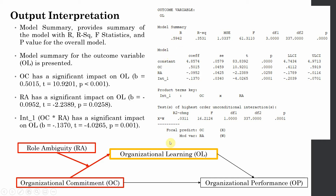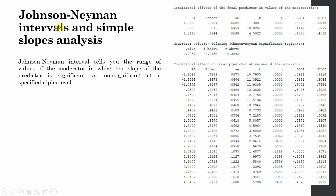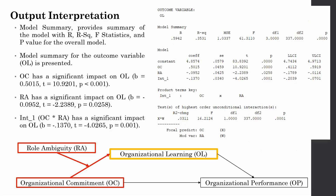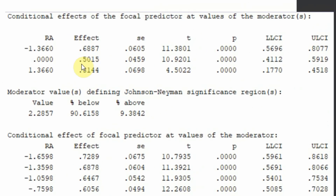We will also have a summary for the organizational performance outcome later. The next part of the output is Johnson-Neyman intervals and simple slope analysis — the impact of the focal predictor on the outcome in the presence of the moderator. Here, the focal predictor is organizational commitment and the outcome is organizational learning, since that is the relationship being moderated.